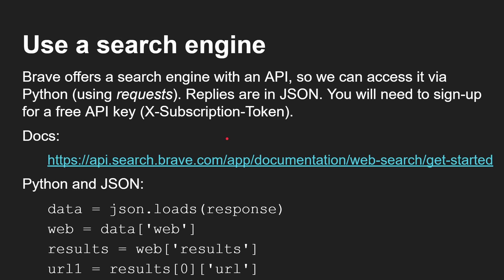For the search engine, Brave offers a search API so you can access it via Python using requests. Replies are in JSON, so they're very easy to parse from a Python point of view. You'll need to sign up for a free API key, which is called an X-Subscription-Token, which you include in the header. Once you get back the result, you do: data equals json.loads(response). Inside that there is a web section, inside the web section there's a results section, and then the first URL is results[0]['url']. Get the URL, then you can use that to go and fetch the web page. Use results[1], results[2], and so on — pretty good way to get results from the Brave search engine.